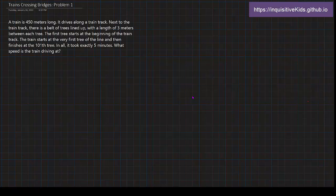So, welcome to Problem 1 of our Trains Crossing Bridges series. A train is 450 meters long. It drives along a train track. Next to the train track, there is a belt of trees lined up with a length of 3 meters between each tree. The first tree starts at the beginning of the train track. The train starts at the very first tree of the line and then finishes at the 100th and 1st tree. After all, in all, it took exactly 5 minutes. At what speed is the train driving at?